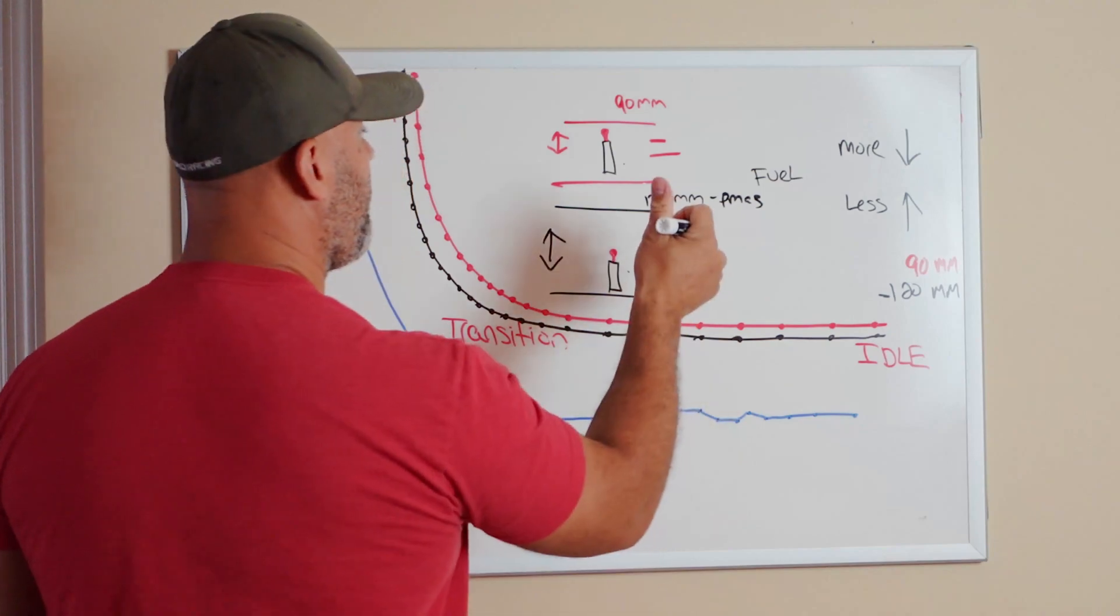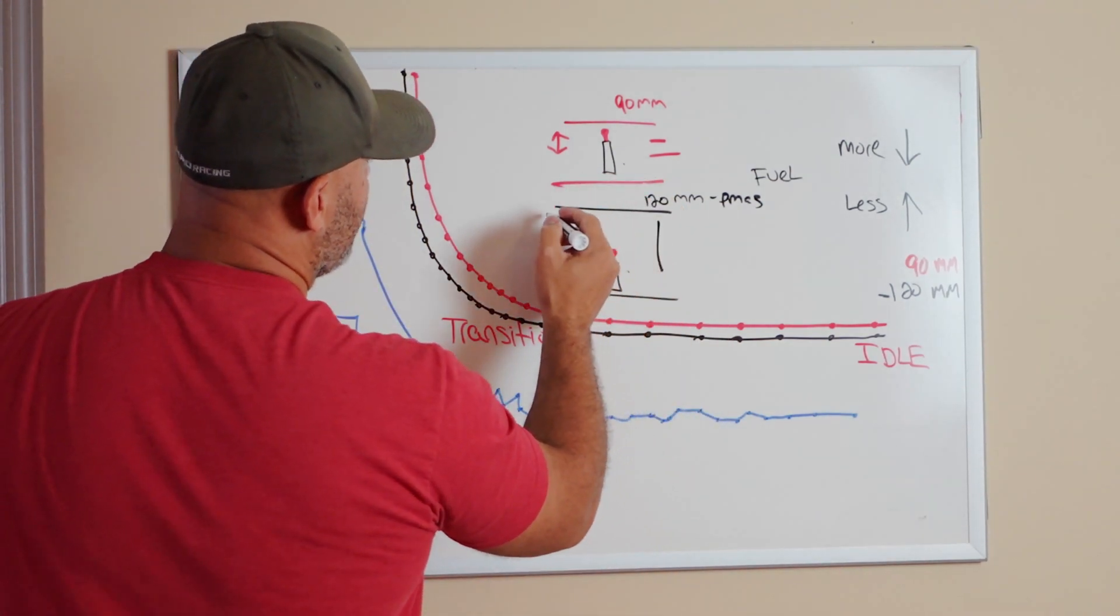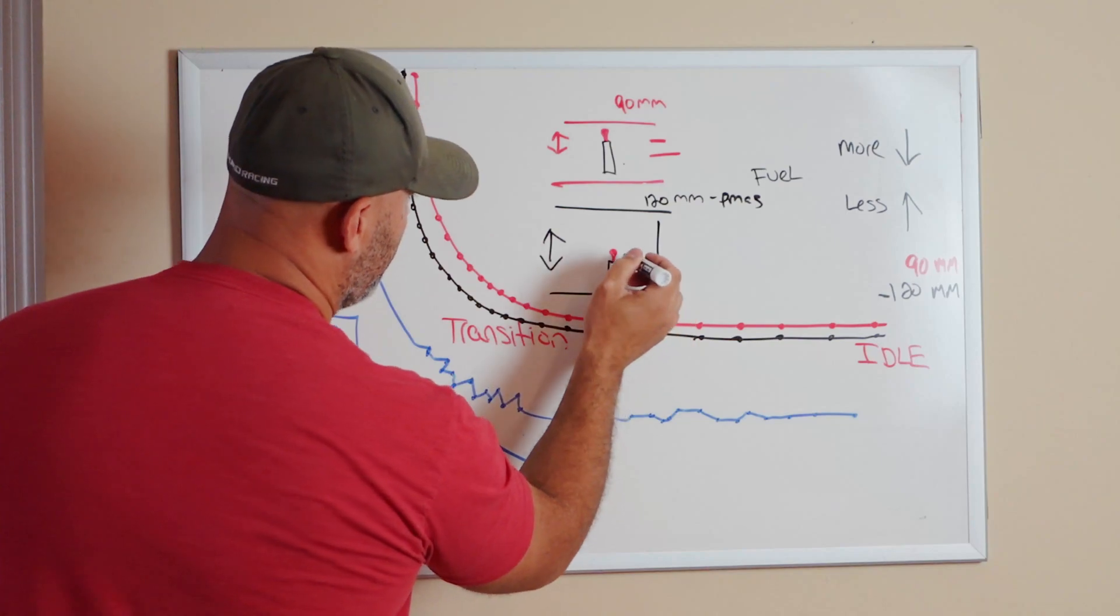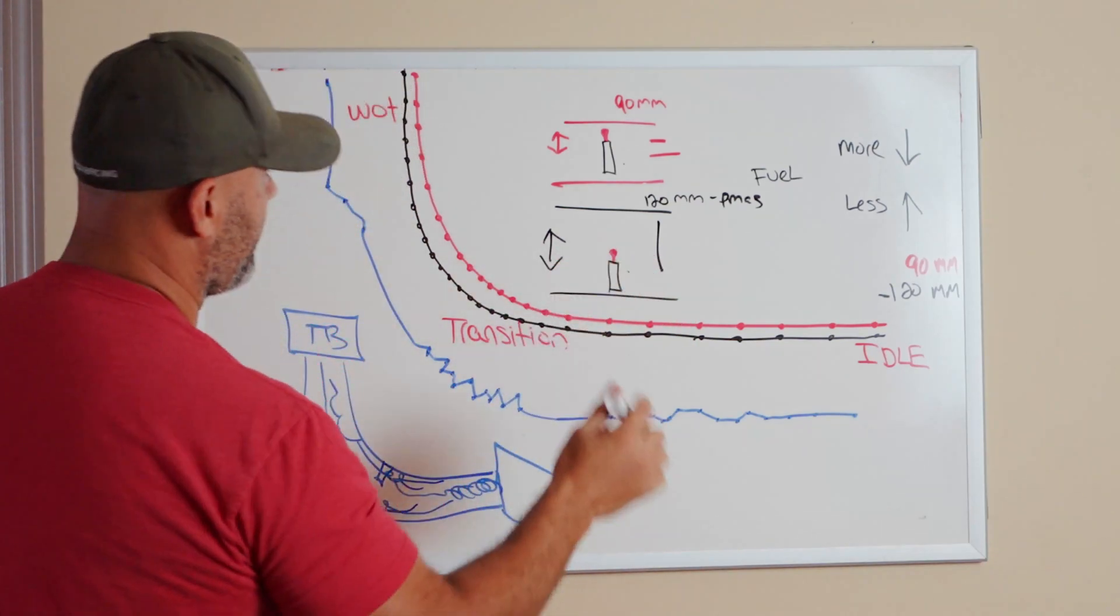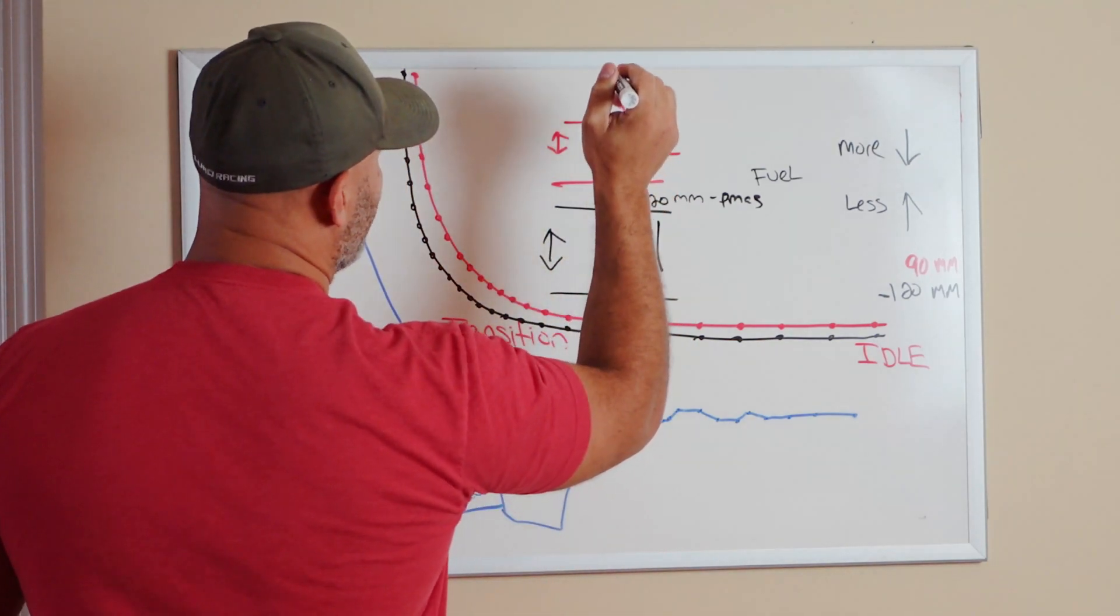More mass, more fuel. You understand? The numbers in the tune go up for fueling purposes because there is more mass being picked up by the mass airflow sensor as opposed to a stock housing.